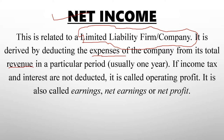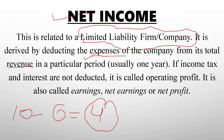For example, suppose our total revenue is 10,000,000 and our expenses are 6,000,000. After deducting expenses, we are left with 4,000,000 — that is the net income of the company for a particular period. If income tax and interest are not yet deducted, this is called operating profit. Net income is also called earnings, net earnings, or net profit.